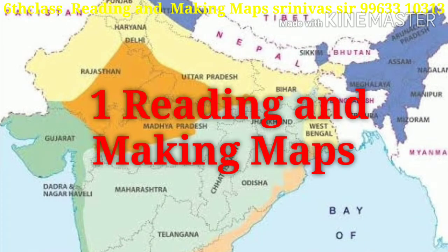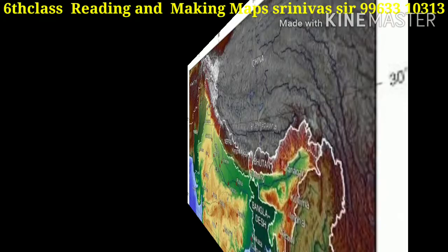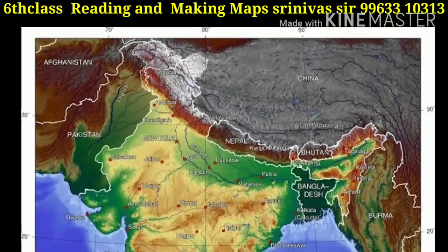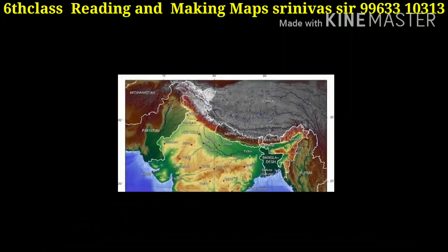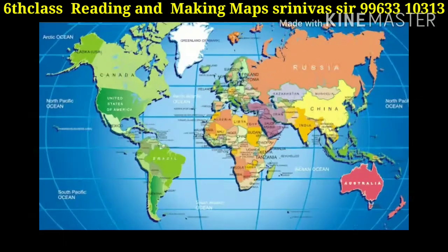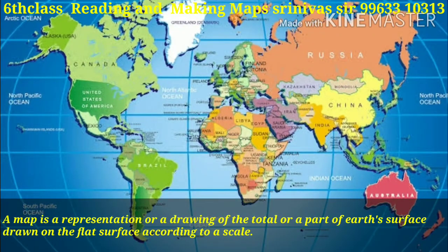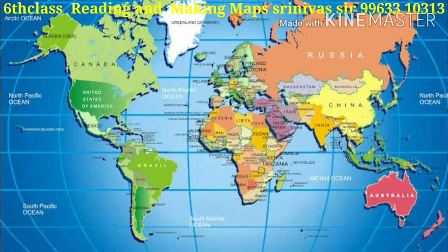What is a map? A map is a representation or a drawing of the total or a part of the earth's surface drawn on a flat surface according to a scale.